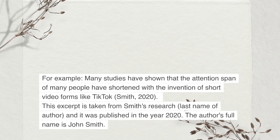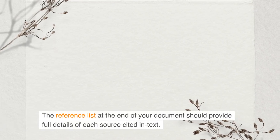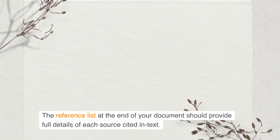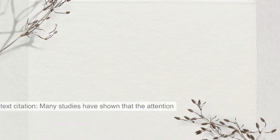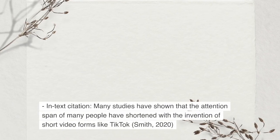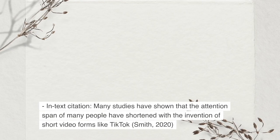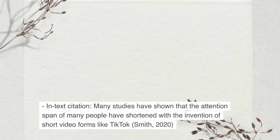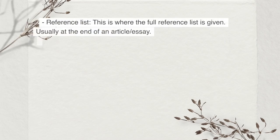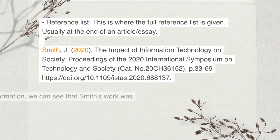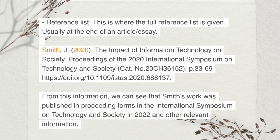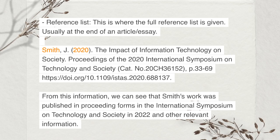The reference list at the end of your document should provide full details of each source cited in text. Here's a quick example. In-text citation: 'Many studies have shown that the attention span of many people have shortened with the invention of short video forms like TikTok.' (Smith, 2020). Reference list — usually at the end of an article or essay: Smith, J. (2020). The Impact of Information Technology on Society. Proceedings of the 2020 International Symposium on Technology and Society.